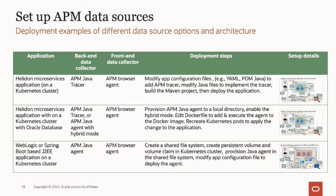Once you determine the type of data source you want to use, the next step is to configure and deploy it with your application. For a Helidon-based microservice application running on a Kubernetes cluster, you can use the APM Java tracer as the data source for the server side and the APM browser agent for the front end. The deployment steps require manually editing Java code and configuration files such as pom.xml or application YAML files.